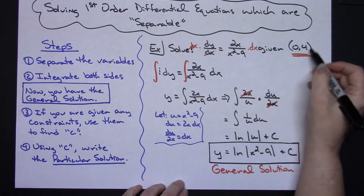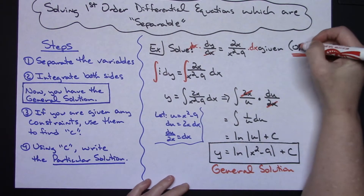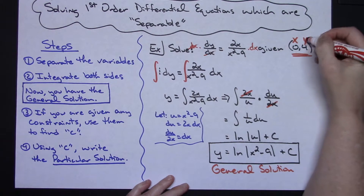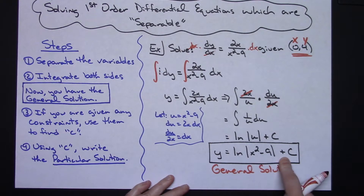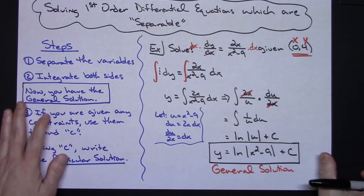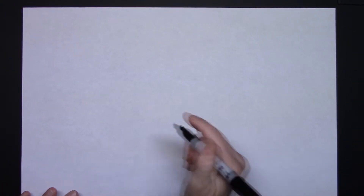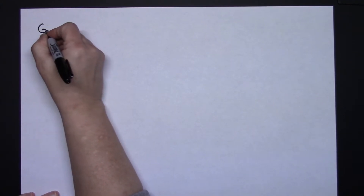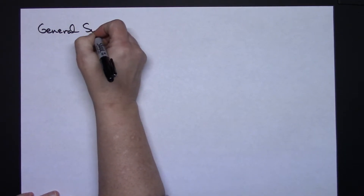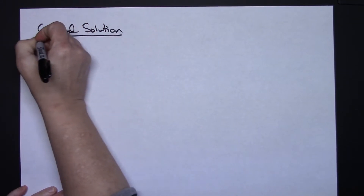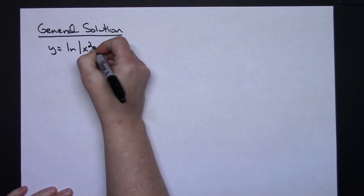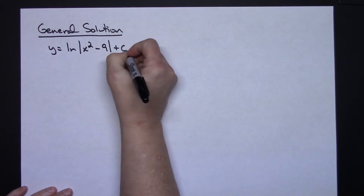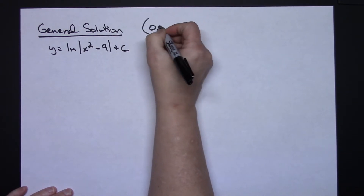However, a constraint was given, so let x = 0 and y = 4 and plug those into the general solution: y = ln|x² − 9| + c. Rewriting the general solution: y = ln|x² − 9| + c, with the constraint (0, 4).